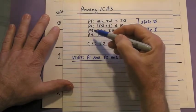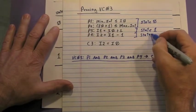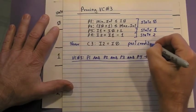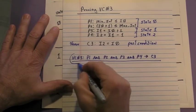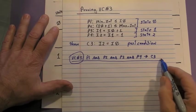Here, I've written out all the premises and added P4 from state 2. We need to show conclusion C3, which is the post condition for do nothing. Here's VC number 3. P1, P2, P3, and P4 implies C3.